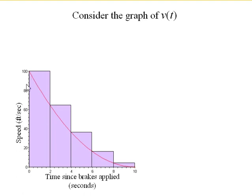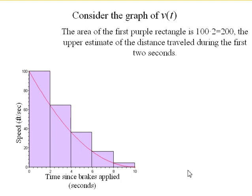Notice that the area of the first rectangle is 100 times 2, or that 200 feet traveled. The second rectangle is 64 times 2, or the distance traveled during the second 2 seconds. So what we're finding is the area of these purple rectangles represents what we found.